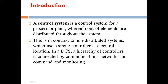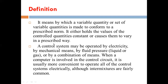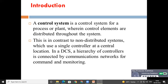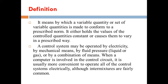This control system is basically a process or plant wherein the control elements are distributed through the system. This is in contrast to a non-distributed system, which uses a single controller at a central location. In a DCS system, a hierarchy of controllers is connected by a communication network for command and monitoring. By definition, it is the means by which a variable quantity or set of variable quantities is made to conform to a prescribed value.